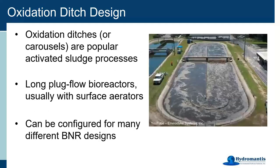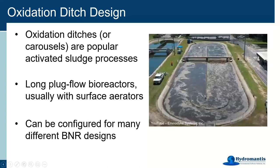You've probably seen an oxidation ditch somewhere along your journeys — they're actually quite popular, particularly in North America. They look like this Envirodyne system version, a pretty simple one. We have flow moving around in a clockwise fashion through a long plug flow system — influent comes in and exits through an effluent port, while most flow moves around the loop. They often have surface brush aerators that rotate at high speed, throwing water around and entraining oxygen bubbles, creating significant turbulence.